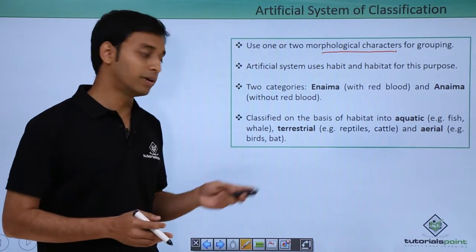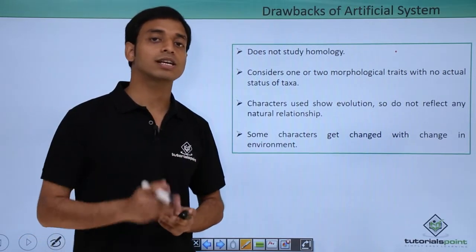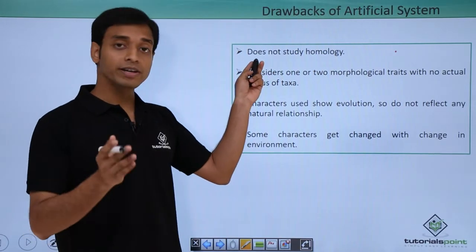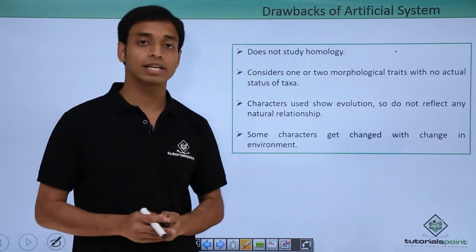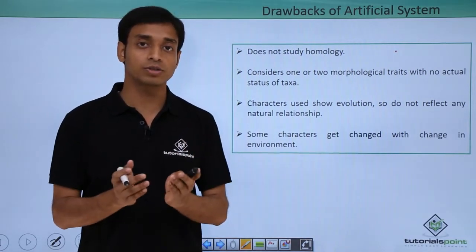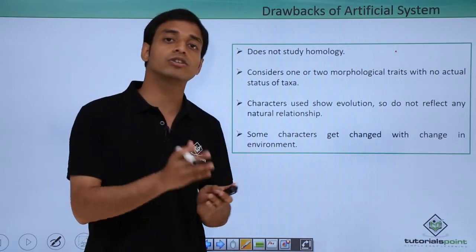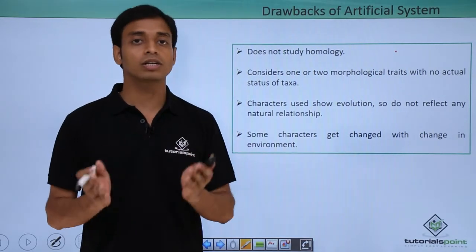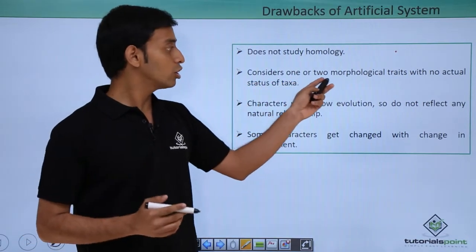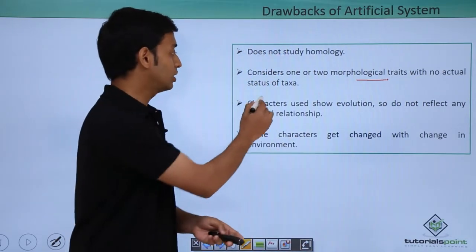Now let us discuss the drawbacks of the artificial system of classification. A very important drawback is that it does not study homology — that is, it does not consider evolutionary relationships or the origin of a particular organ. It considers only one or two morphological traits, which has no actual status of a taxa.